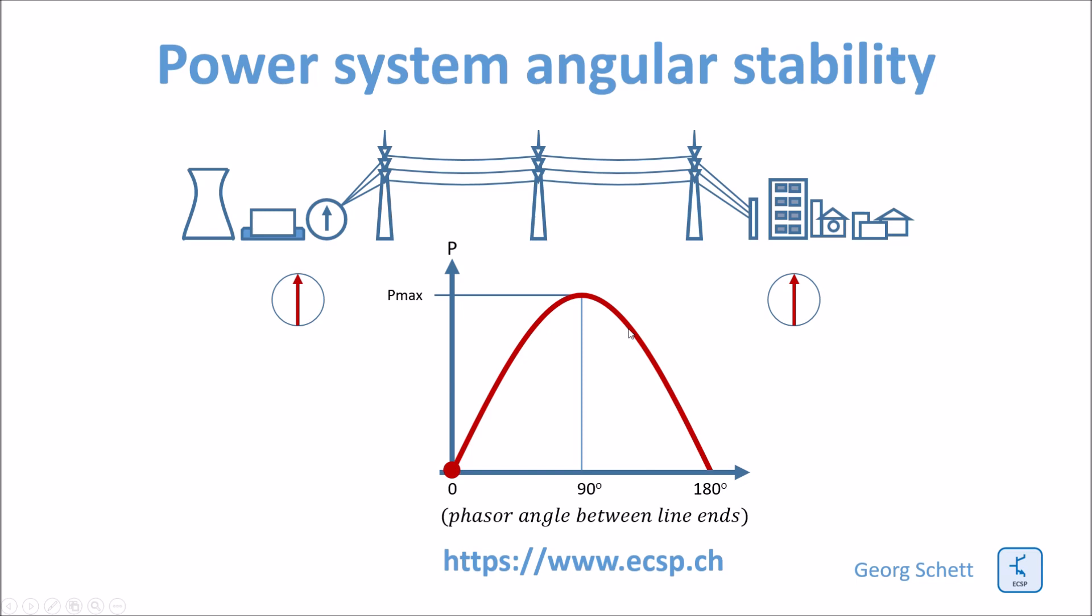This function is a sinus curve, a half-cycle sinus curve. So you would start with zero power at the angle zero between the phases of the line end. The maximum power would be provided when the phase angle is on 90 degrees, and later on it would decrease again until it reaches 180 degrees.